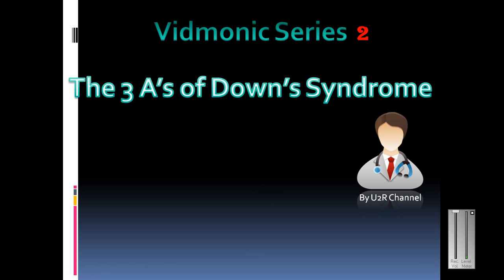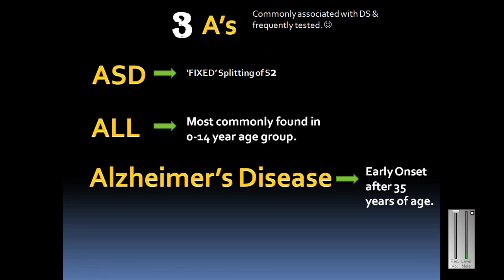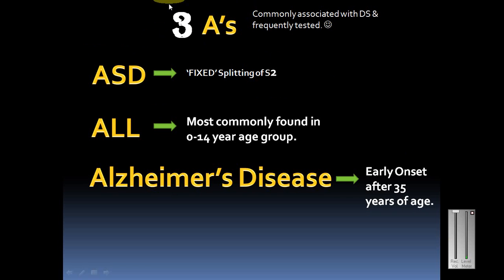The three A's associated with Down syndrome are ASD, ALL, and Alzheimer's. These are very frequently associated with Down syndrome and must be known because they are seen in many vignettes. You must know these three A's as they are frequently tested.